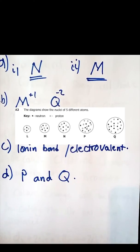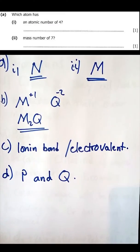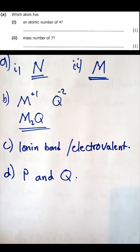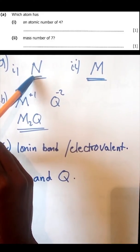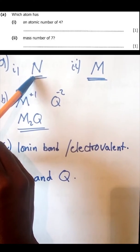Question 3a: which atom has an atomic number of four? The atom that has an atomic number of four from that listing is atom N. Which atom has the mass number of seven? From that listing it is atom M.